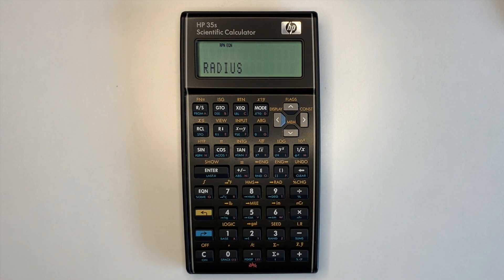So it asks for the radius first, then it stops, so I'll put in 10, run stop, and then it says the area is 314.1593.